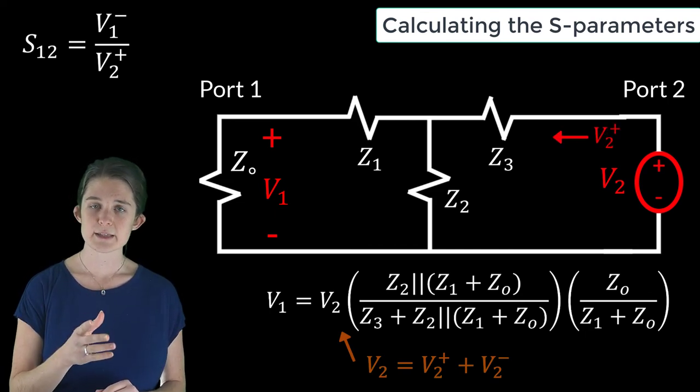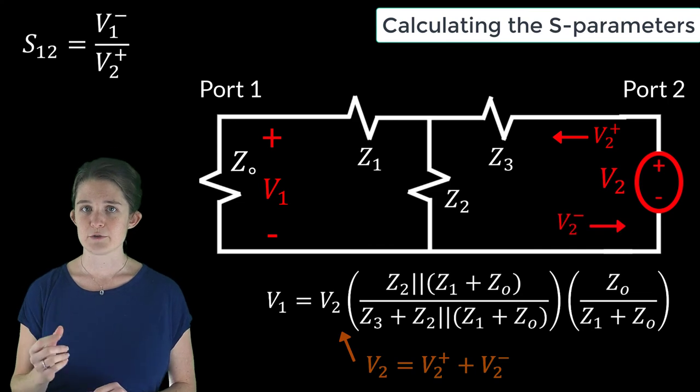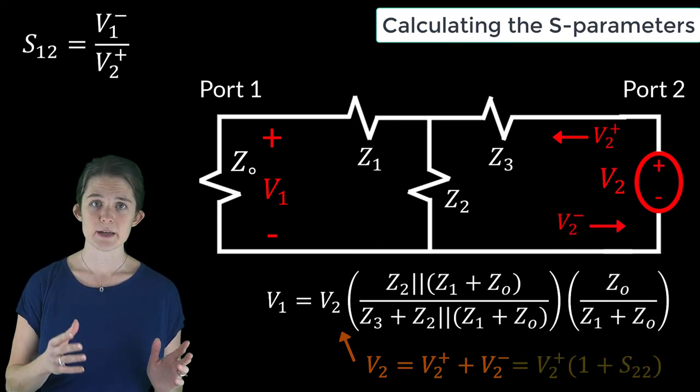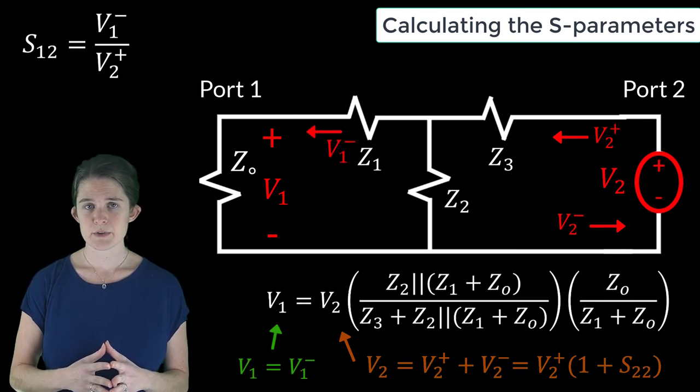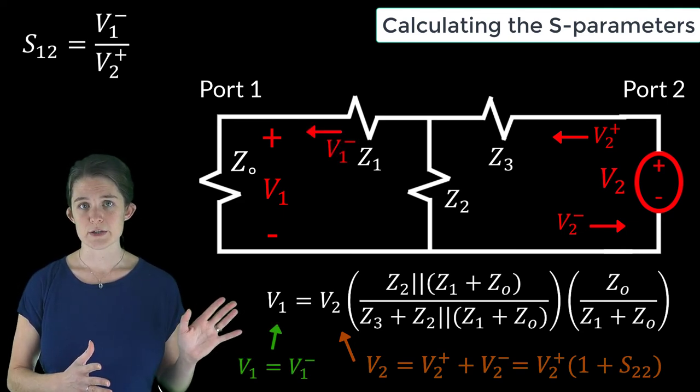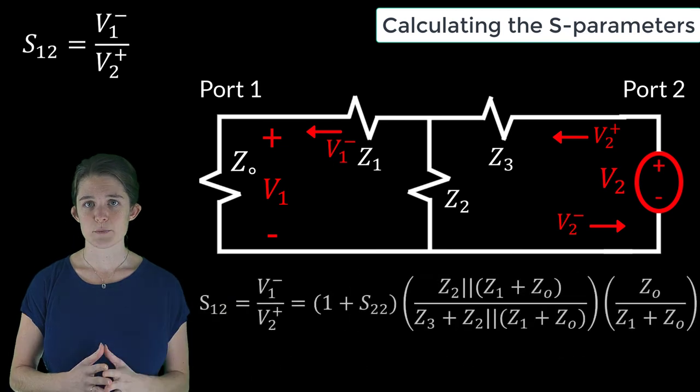Or V2 plus times one plus S22. And V1 is just equal to V1 minus. So if we plug those into this equation, we can get the final answer for S12.